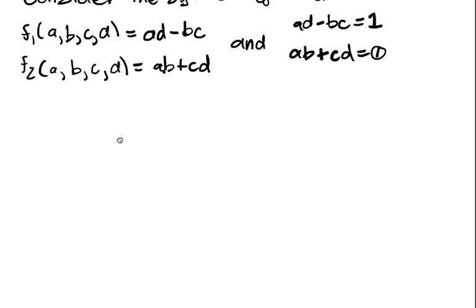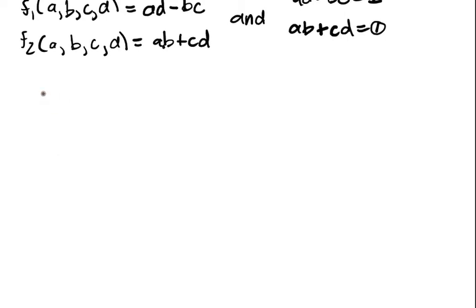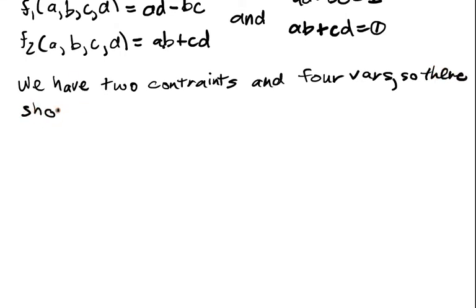We count the variables and the constraints. We have two constraints and four variables, so there should be two free variables floating around.